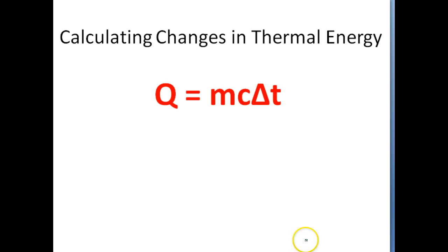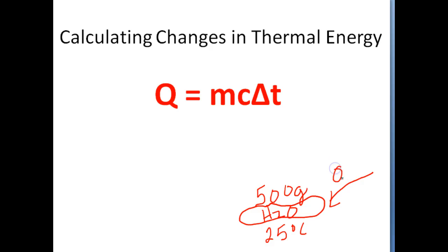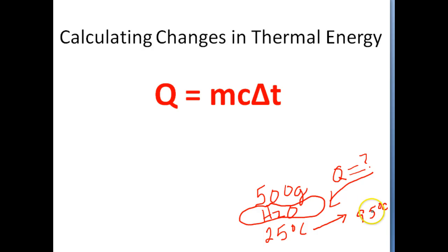Let's suppose for example I have some water. The mass of this water is 500 grams, and the starting temperature of this water is 25 degrees Celsius. This water is going to be left outside on a hot sunny day, so it's going to absorb a certain amount of heat or thermal energy or Q. If this water absorbs thermal energy from the sun, then its temperature is going to increase — let's suppose to 95 degrees Celsius. We want to figure out how much thermal energy this water needs to absorb to raise its temperature from 25 degrees Celsius to 95 degrees Celsius.